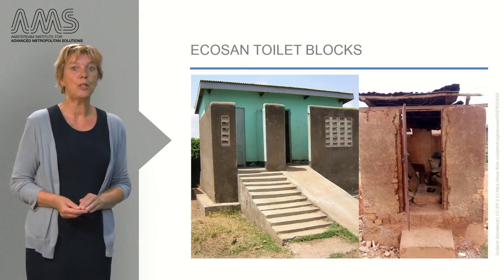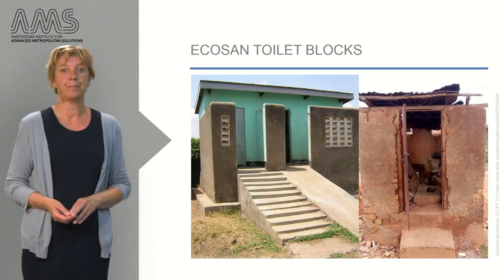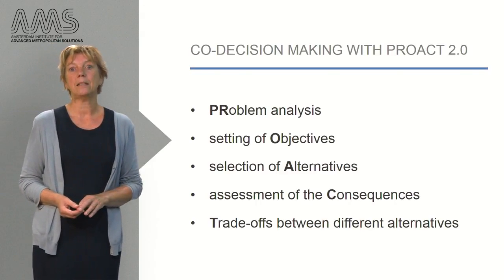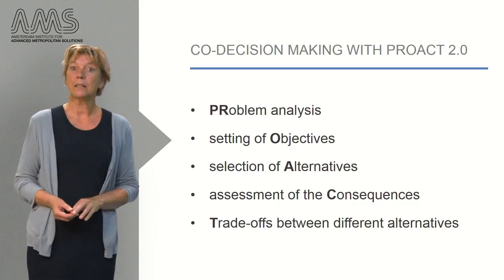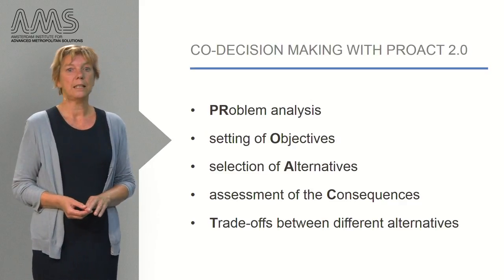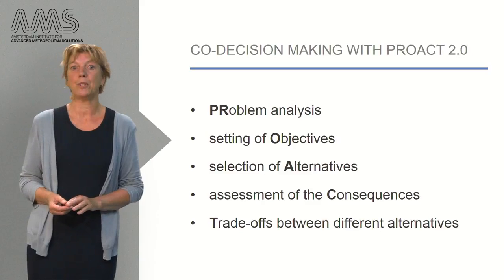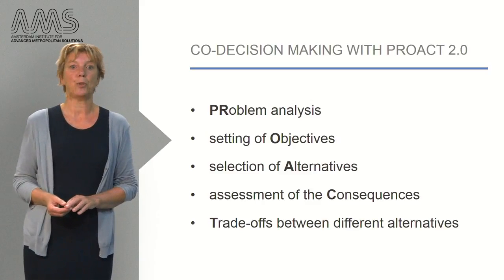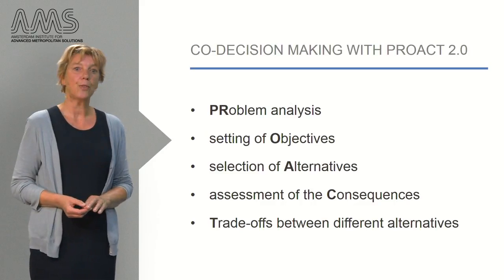But how can these potential users be involved in the decision-making process? PROACT is a decision-making method that matches very well with a stakeholder dialogue. The PROACT method consists of five phases: problem analysis, setting of objectives, selection of alternatives, assessment of the consequences, and trade-offs between different alternatives. Let's have a closer look at these five phases.